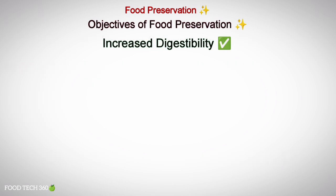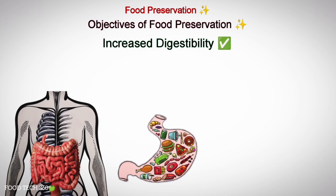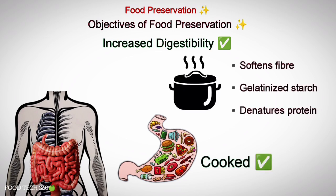The next objective is increased digestibility. Most foods are difficult to digest unless they are cooked. Cooking softens fiber, gelatinizes starch, denatures protein and makes food easier to digest.